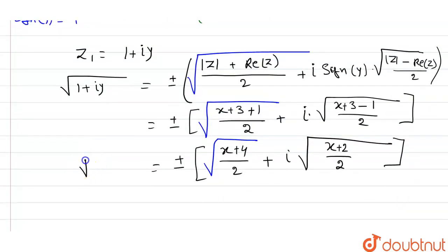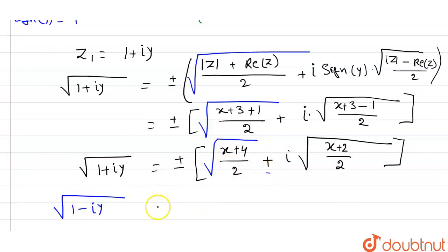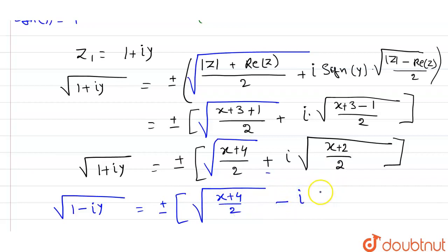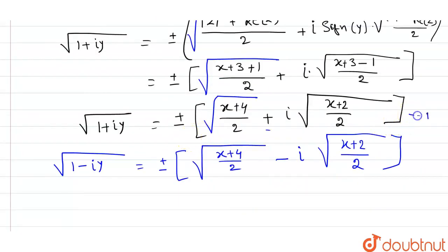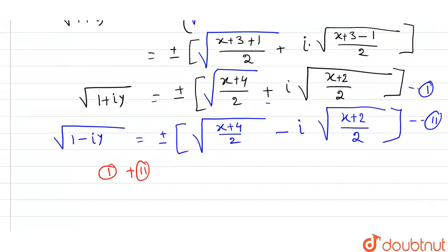So root of (1 + iota·y) equals plus or minus: root of (x+4)/2 plus iota·root of (x+2)/2. Similarly, root of (1 − iota·y) equals plus or minus: root of (x+4)/2 minus iota·root of (x+2)/2. Now adding equations 1 and 2.